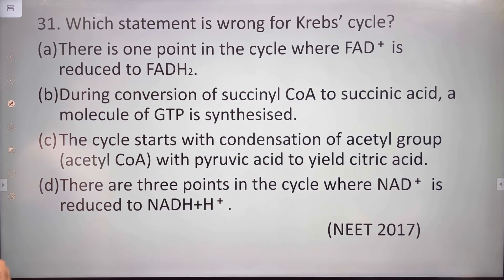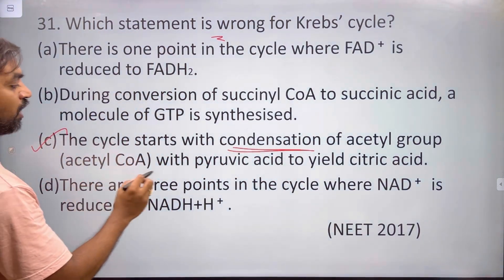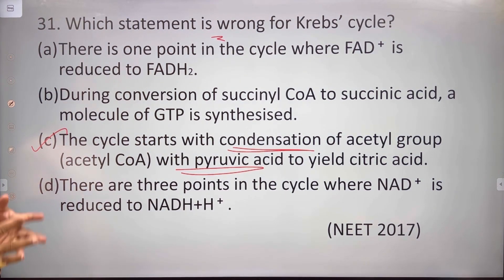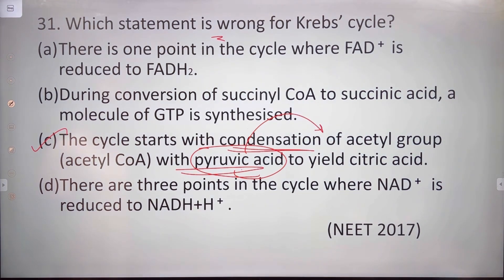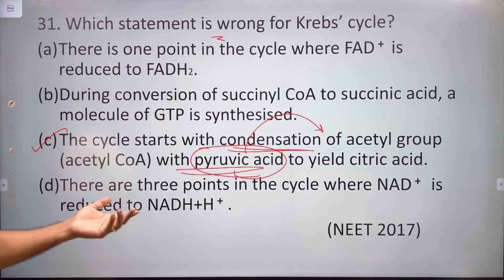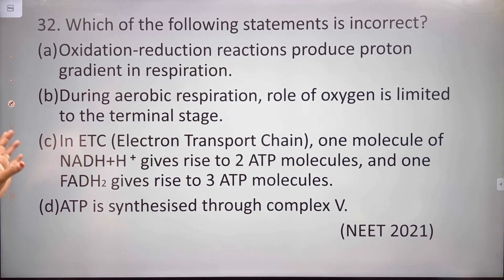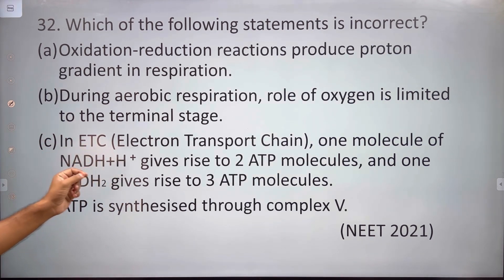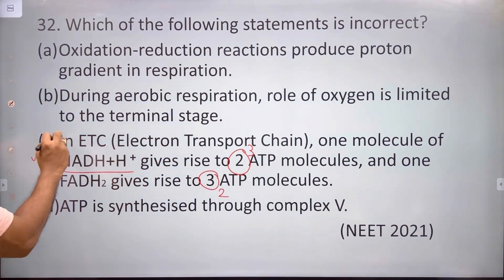Which statement is wrong for the Krebs cycle? The cycle starts with the condensation of acetyl coenzyme A — combining with oxaloacetic acid, not with pyruvic acid. So saying it condenses with pyruvic acid is the wrong statement. Also, one molecule of NADH gives 3 ATP and one molecule of FADH2 gives 2 ATP during aerobic respiration — and the role of oxygen is limited to the terminal stage of the electron transport chain.